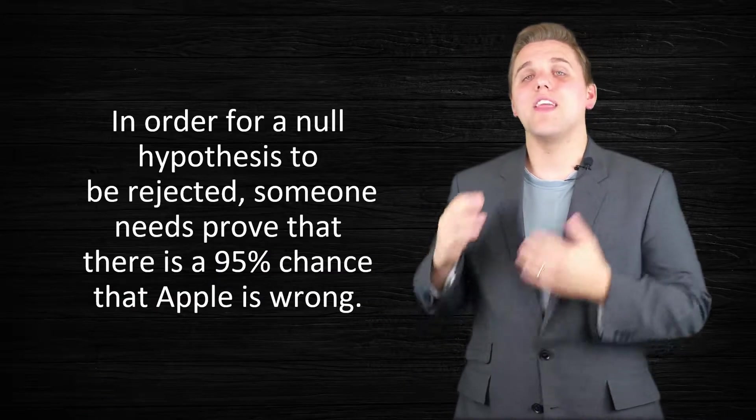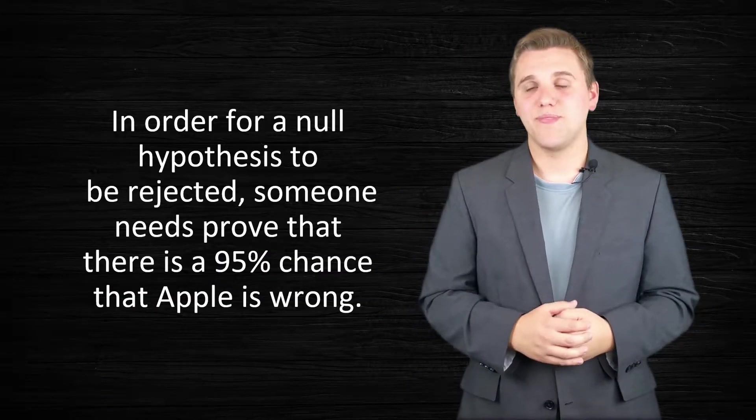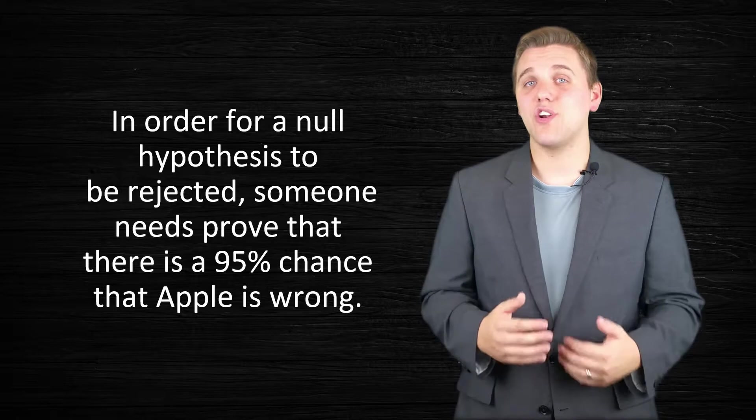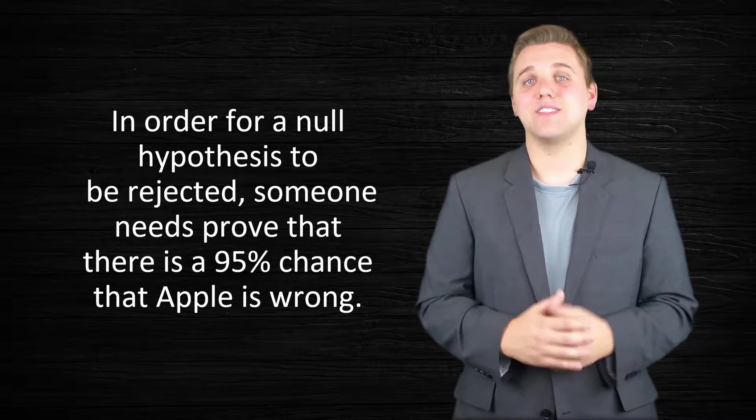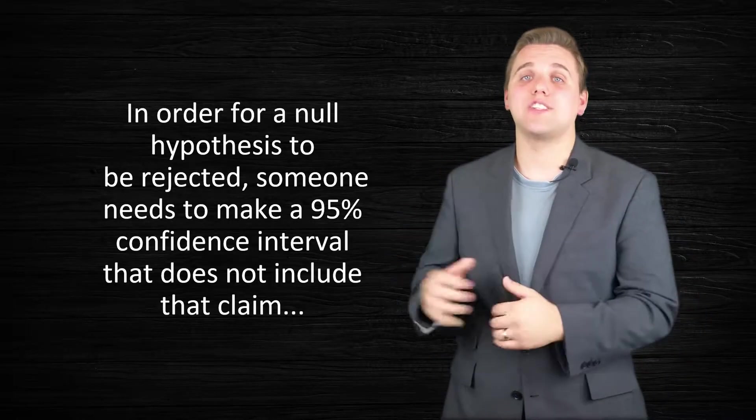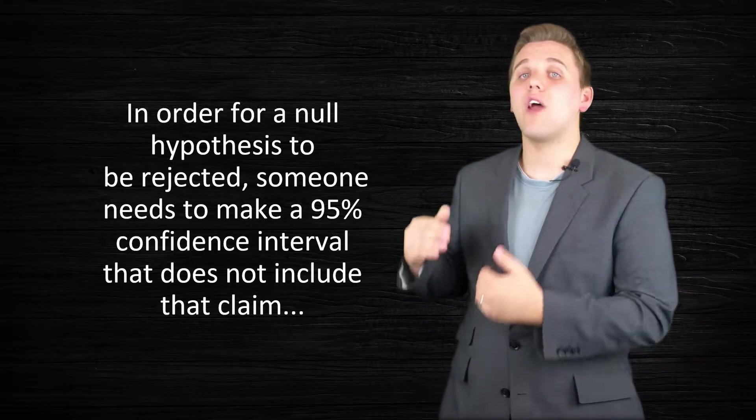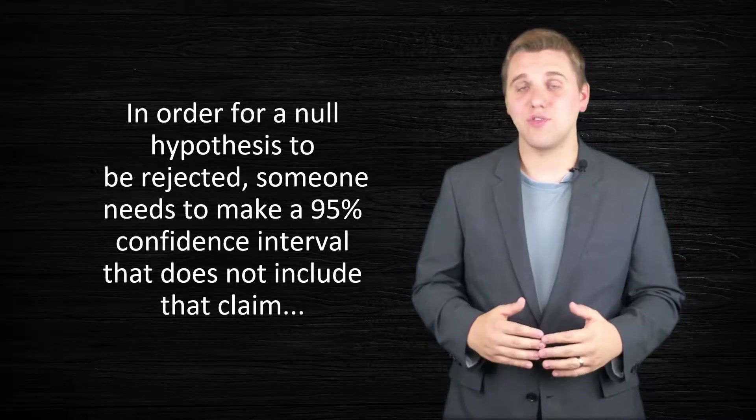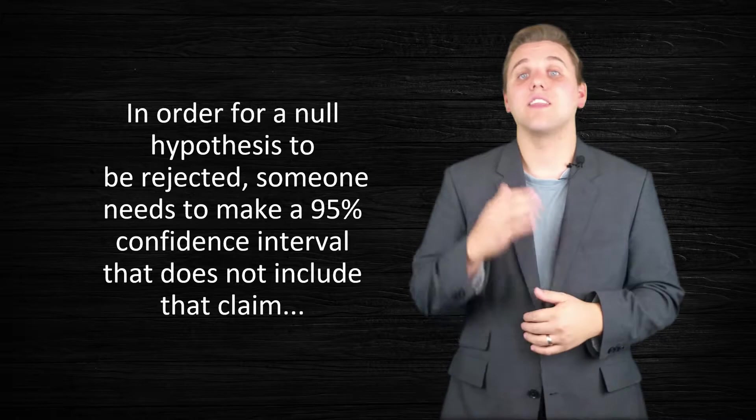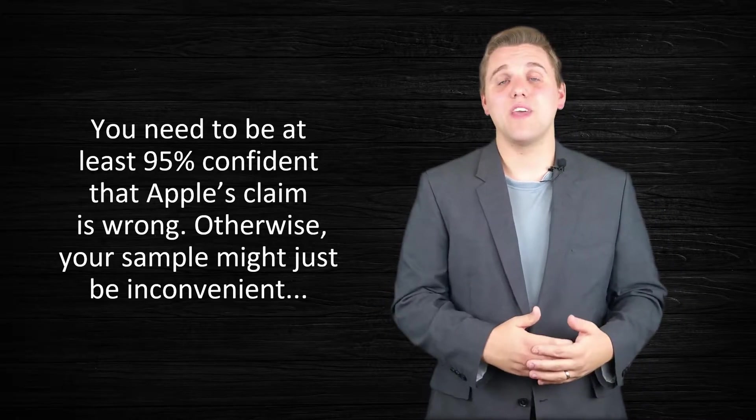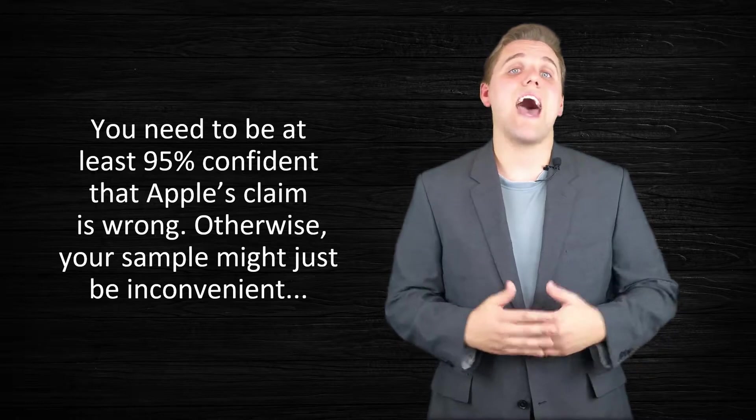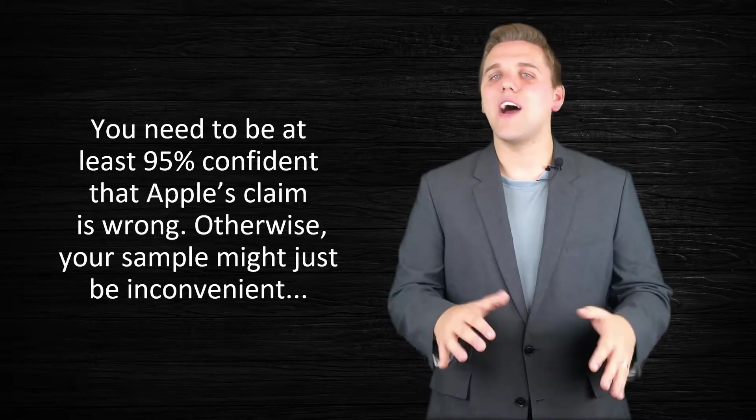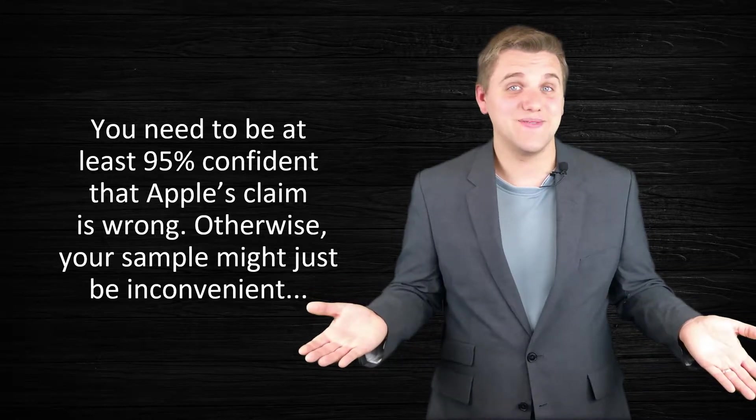Now, this is actually a norm that the scientific community generally accepts. In order for a null hypothesis to be rejected, someone has to be 95% certain that that null hypothesis is false. Now, I'm going to rephrase what I just said but using confidence intervals. In order for a null hypothesis to be rejected, you actually have to build a 95% confidence interval that does not contain the claim. Now, let's go back to our hypothetical. If you want to prove that Apple is wrong, you need to be at least 95% confident that Apple's claim is not correct. Otherwise, your sample could just be inconvenient.